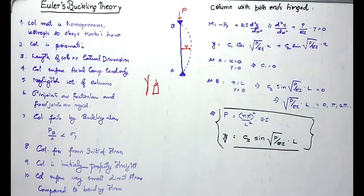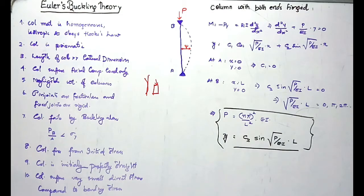The length of the column should be very much greater than its lateral dimension. The fourth assumption is that the column should suffer axial compressive load. In buckling theory, a high compressive axial load causes sudden sidewise deflection, which results in failure. Supplementary loads should be calculated separately in another way.